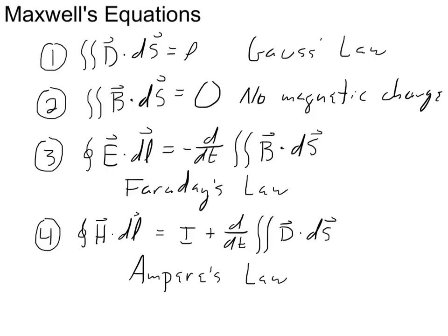Maxwell's equations can be expressed in both differential form involving derivatives and integral form involving integrals. This is the integral form of Gauss's law. This is the no-magnetic-charge rule in integral form. Faraday's law can be expressed in integral form as well. Ampere's law in integral form says that the magnetic field around a loop is equal to the current enclosed plus the rate of change of the magnetic flux through the loop. You might think there are eight Maxwell's equations, but really there are four — whether you express them with derivatives or integrals, they essentially mean the same thing.